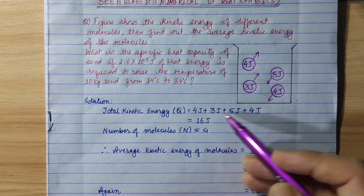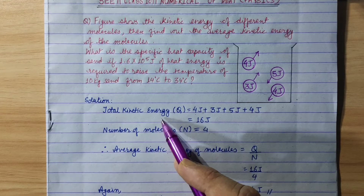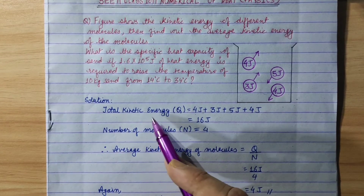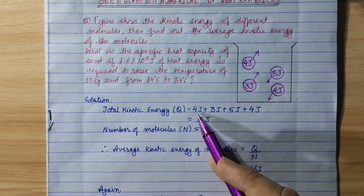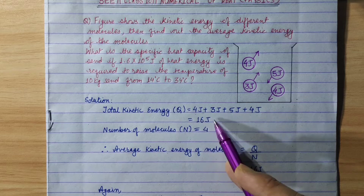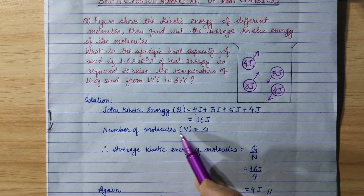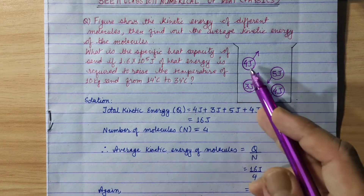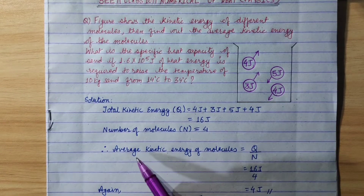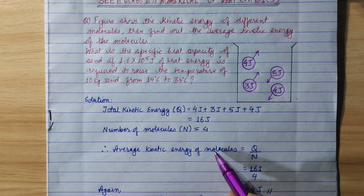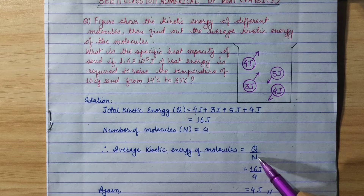I am going to say average kinetic energy. This individual kinetic energy is added to get total kinetic energy. We have thought that total kinetic energy alone will not represent the heat. The total kinetic energy is 16 joules. The number of molecules is 4, so we have the average kinetic energy of molecules.